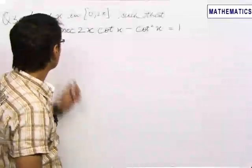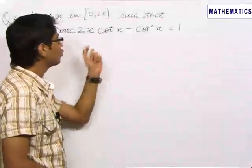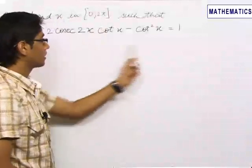Here we have the third problem, in which we have to find the value of x in the range 0 to 2π, such that x satisfies the given equation.